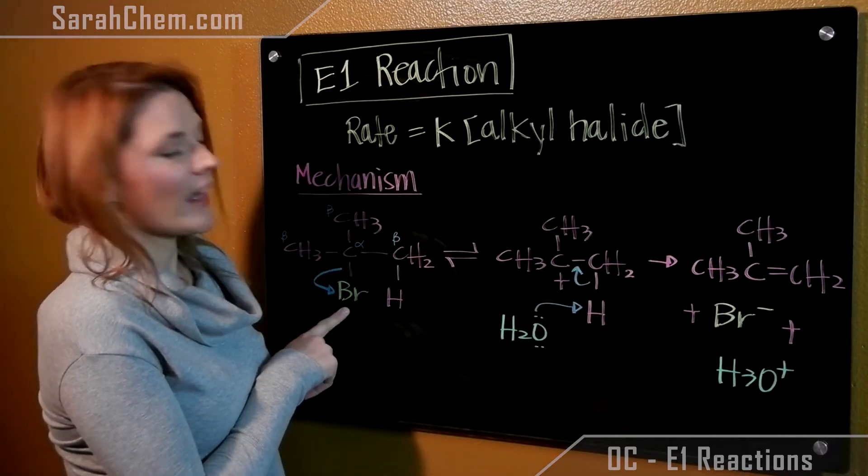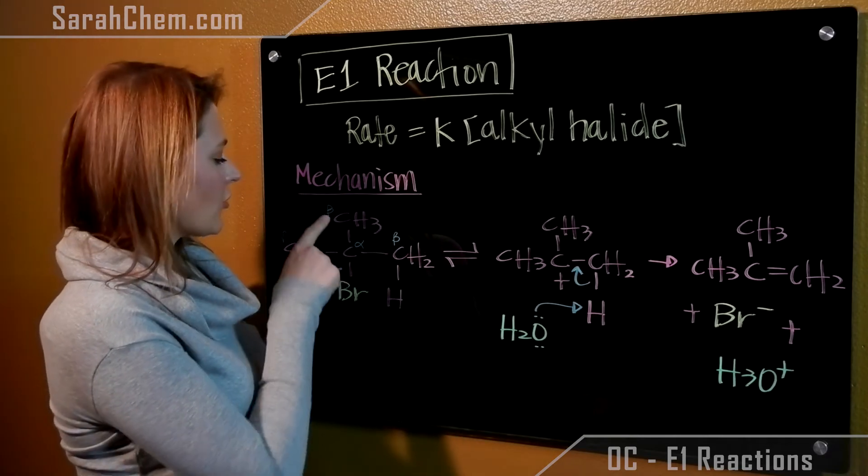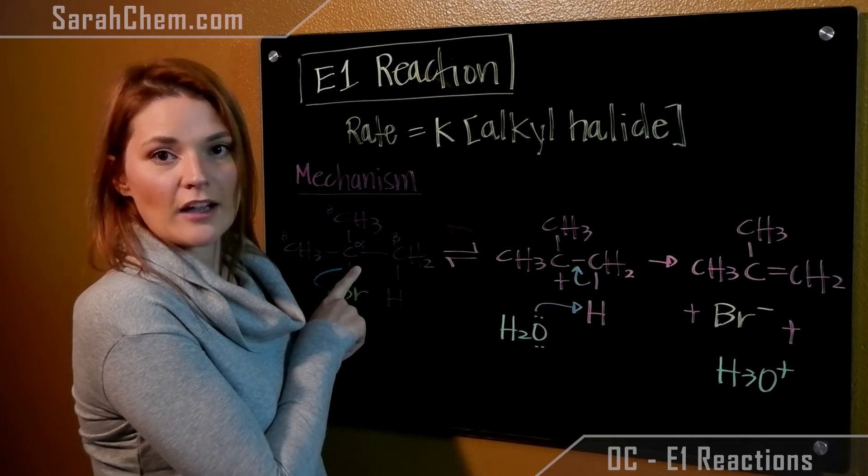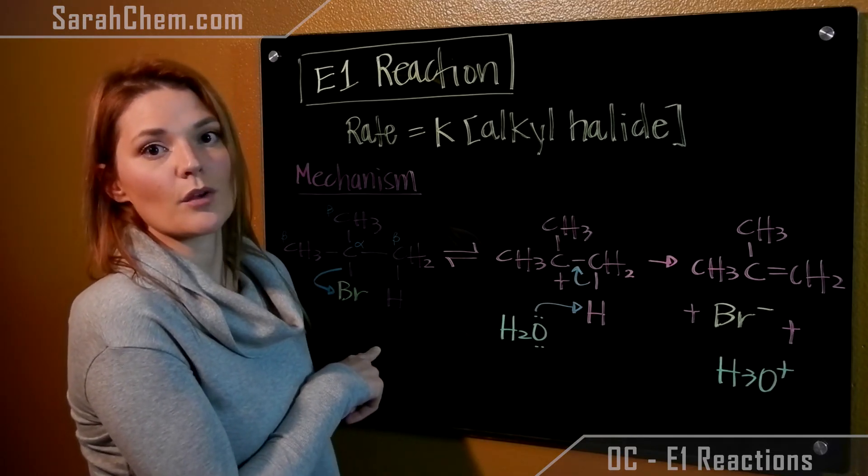First, the carbon that's attached to the halogen is called the alpha carbon. All carbons that are immediately adjacent to that alpha are called betas. Remember, in an overall elimination reaction, you lose the halogen and you also lose the hydrogen off of one of those beta carbons.